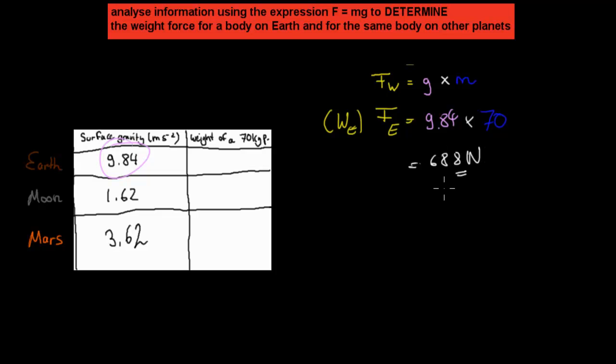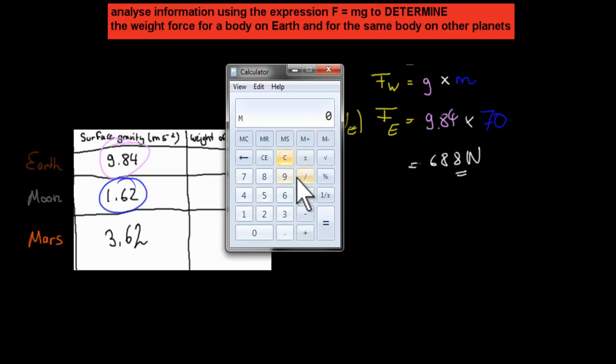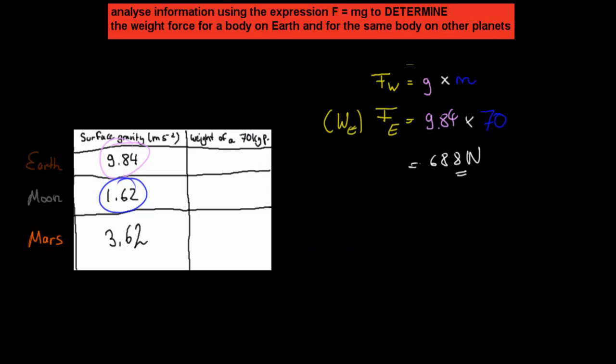If we have the Moon, for example, instead of putting 9.84, we put in 1.62 times 70. Same mass, but a different type of gravity. Now, on the Moon, we weigh a lot less. Our actual weight on the Moon would be, even though we have the same mass, our weight would be 113.4 Newtons. The reason why is because we have a different type of gravity acting on us.